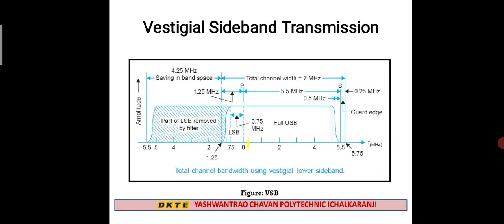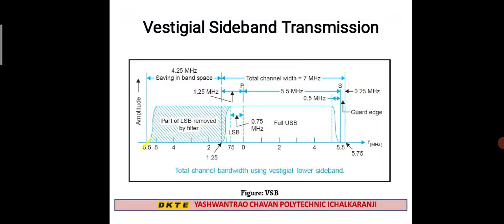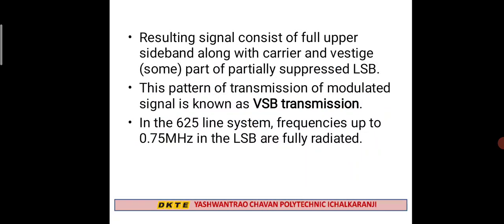In vestigial sideband, we have Fc as the carrier frequency, the full upper sideband on one side, and the total lower sideband on the other. A part of the lower sideband is removed by a filter — that part is suppressed. What remains is combinedly: the carrier frequency, the upper sideband, and a part of the lower sideband. This is the vestigial sideband transmission structure.